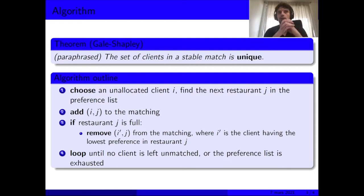The algorithm is to choose an unallocated client i, find the next restaurant j in the preference list, and add them to the matching. If the restaurant is not full, it's okay.